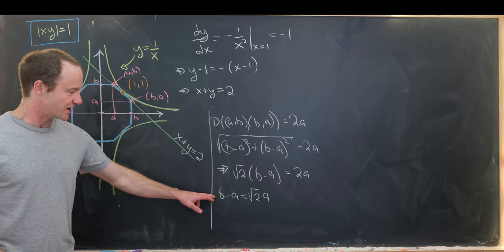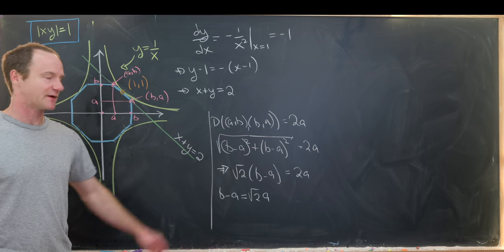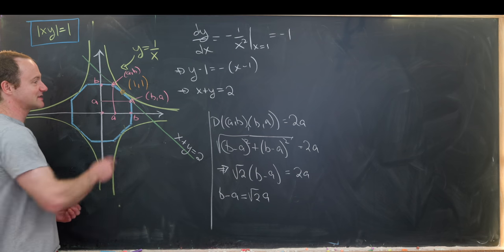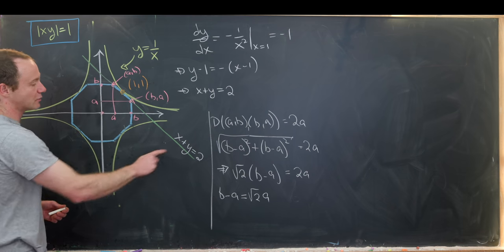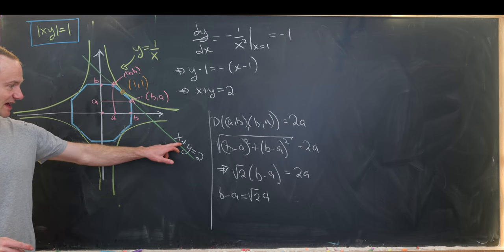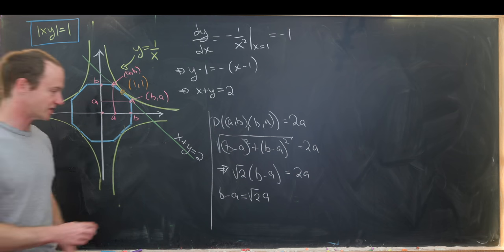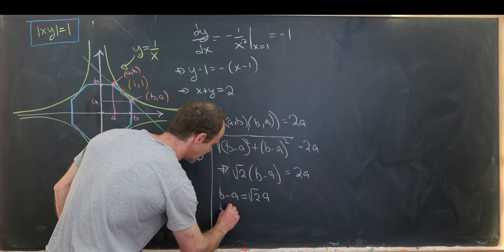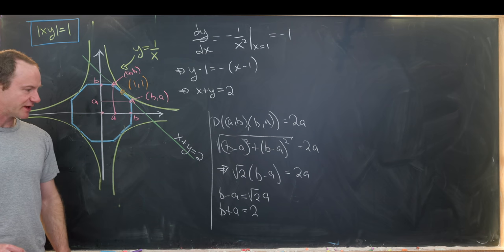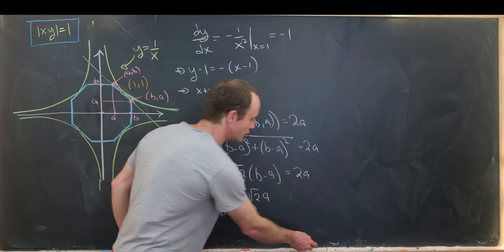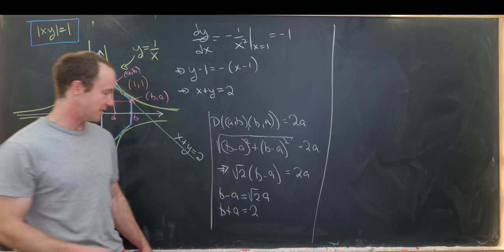But there's actually another equation that's satisfied by a and b also. And that's because this b comma a and this a comma b are also points along this tangent line that satisfy this equation. So that means we also know that b plus a equals 2. Okay so now we're in a pretty good spot. So let's take those two equations and see if we can solve for a and b.